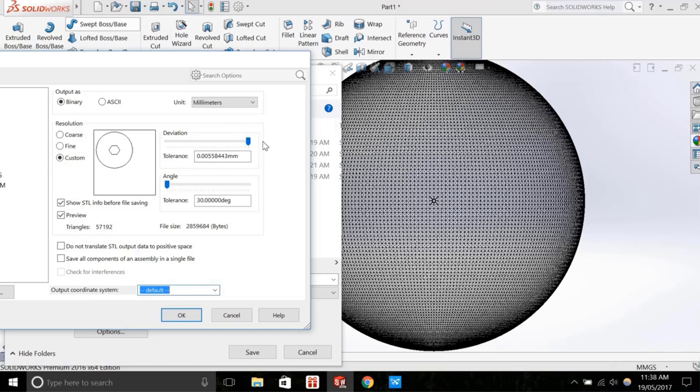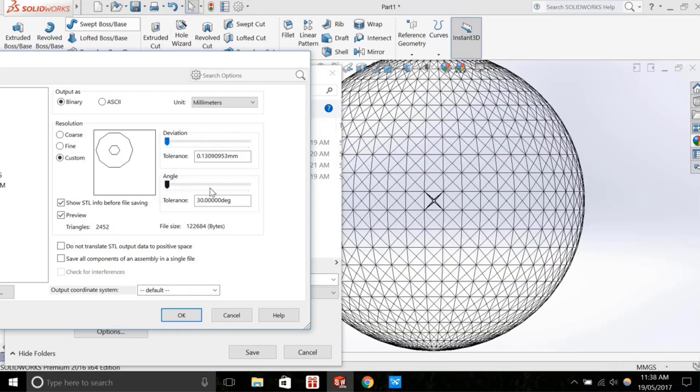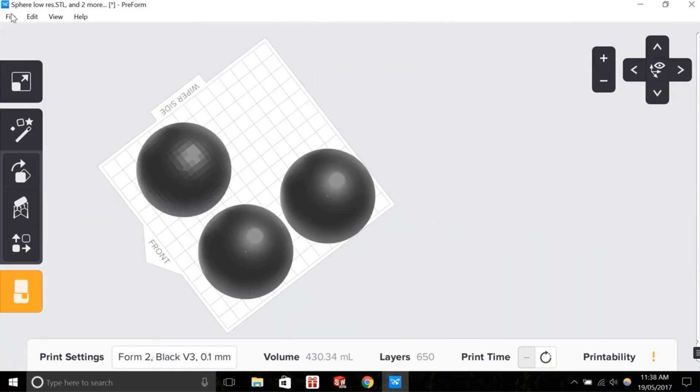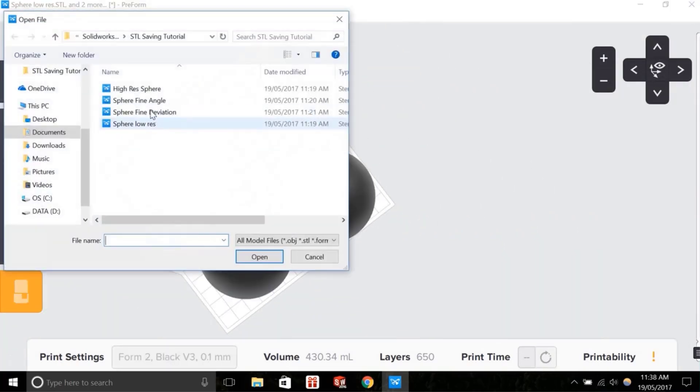The second parameter is angular deviation or angular tolerance. Angular tolerance limits the angle between the normals of adjacent triangles. The default angle is usually set at 15 degrees. Decreasing the tolerance, which can range 0 to 1, improves print resolution. In this diagram you can clearly understand how this angular tolerance works.